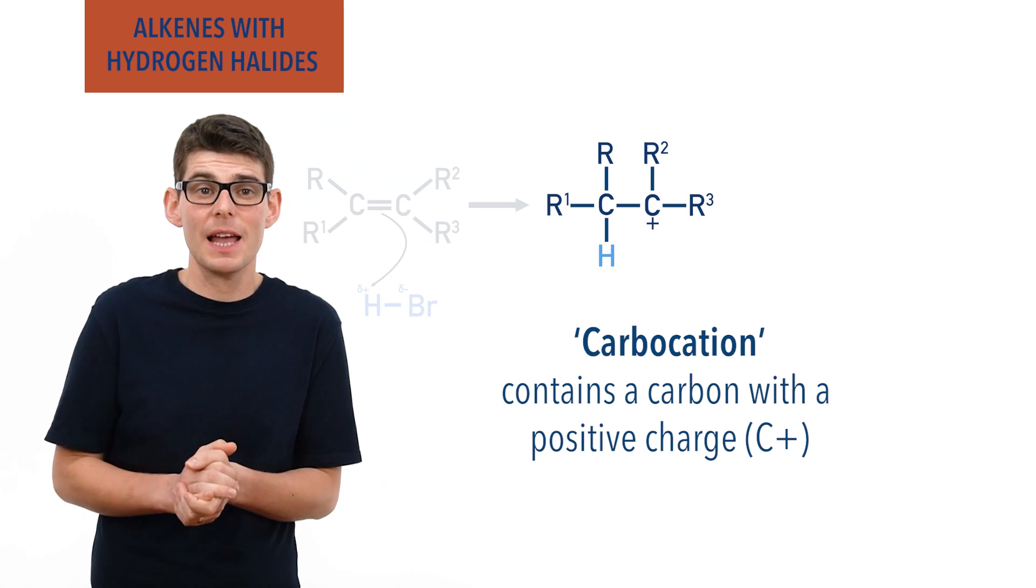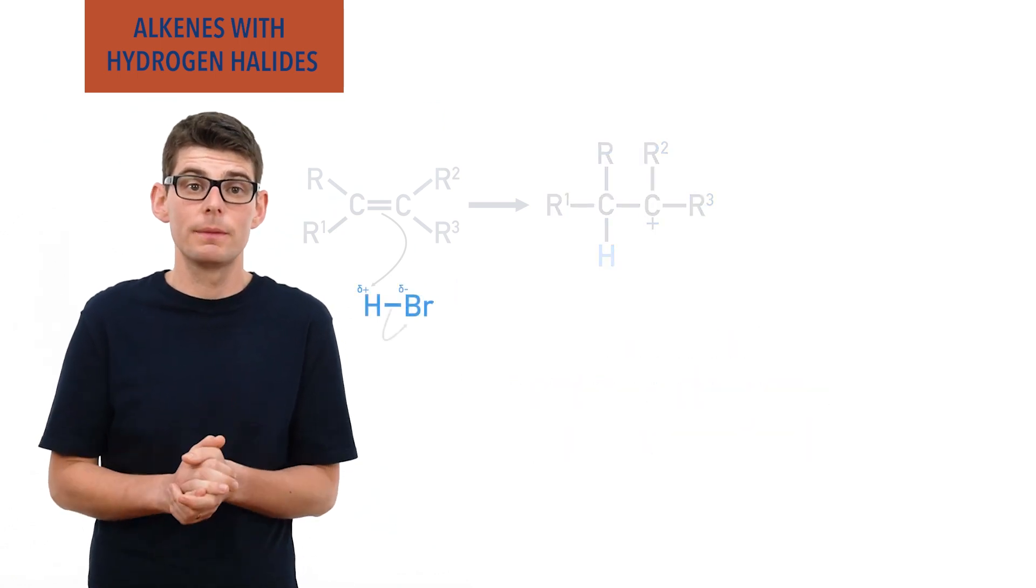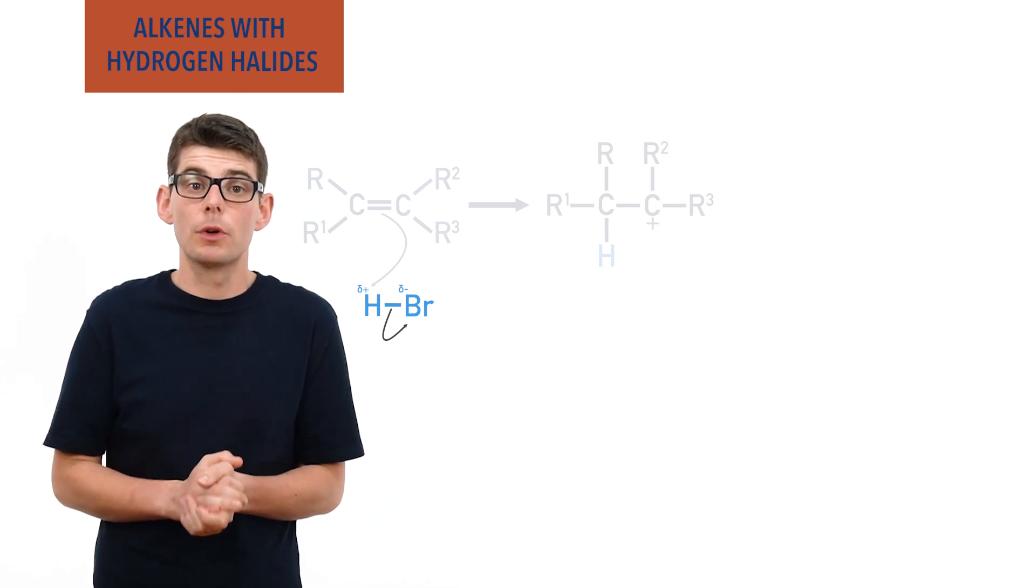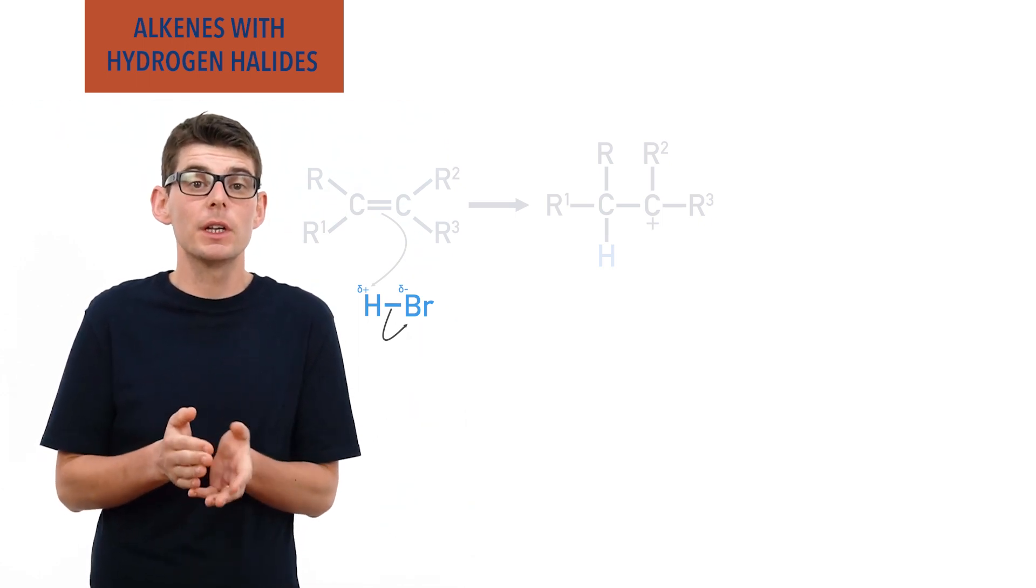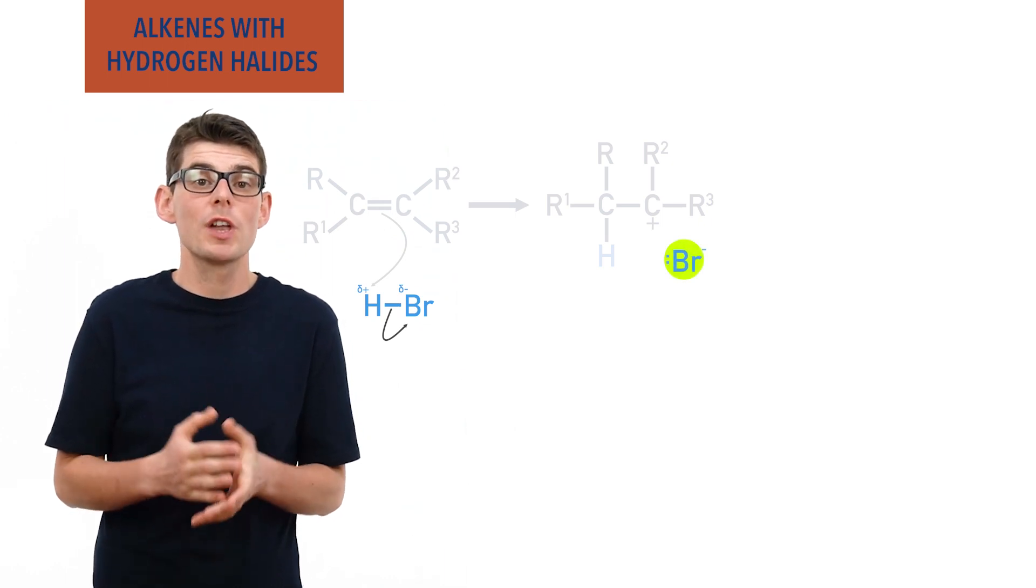As all this is happening, the bond between the hydrogen and halogen will break. The pair of electrons from the bond go to the halogen and become a lone pair. The halogen ends up becoming a negatively charged halide ion.